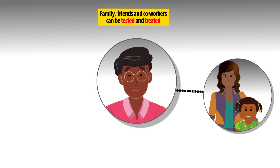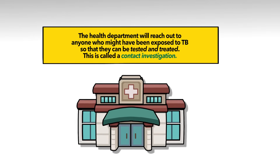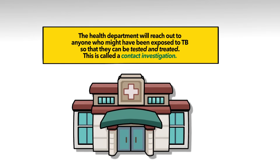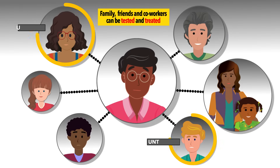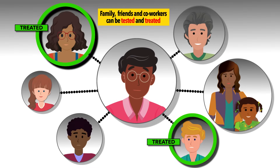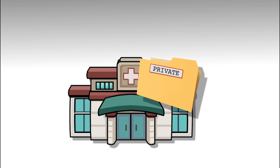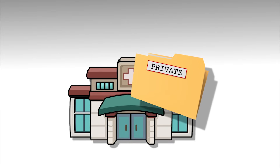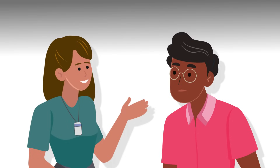This includes family members, friends, and coworkers. The health department will reach out to anyone who might have been exposed to TB germs so that they can be tested and treated. This is called a contact investigation. If someone has been infected, they can be treated to prevent them from becoming sick with TB disease. The health department will not share Arun's name or tell that he has TB — they will work as hard as they can to keep Arun and everyone else's personal information private. Arun may be feeling guilty about spreading TB to others, but he can help keep his family and friends healthy by talking with the health department.